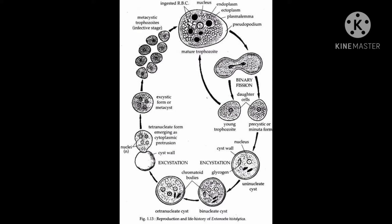The precystic stage is a non-feeding stage. In this stage, it uses up its stored food material and its nucleus undergoes two mitotic divisions, leading to the formation of a tetranucleated cyst.